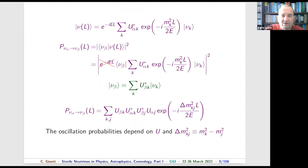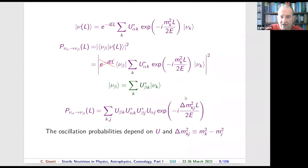To find the oscillation probability into flavor beta, we project the evolving state onto the state corresponding to flavor beta and take the modulo squared. The common phase disappears, and we are left with an expression depending only on the squared neutrino masses divided by energy, multiplied by the distance. One can easily compute this modulo squared to get the general oscillation probability expression.